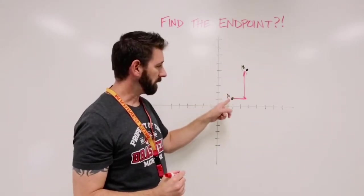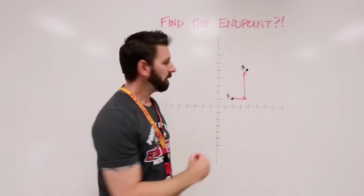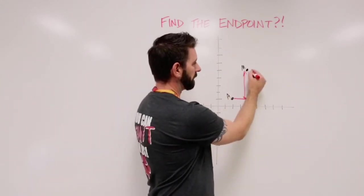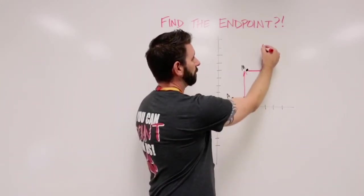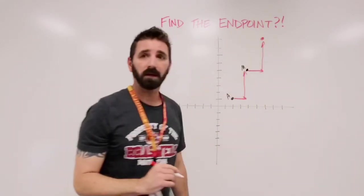I know that if I go two spaces to the right and I go up four spaces, I'll get to the midpoint between these two points. From the endpoint to the midpoint, I go over two and up four. And that means if I start from the midpoint and I go over two more and up four more, then I'm going to find the coordinates of my other endpoint.